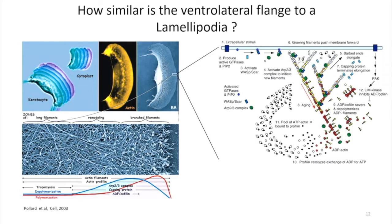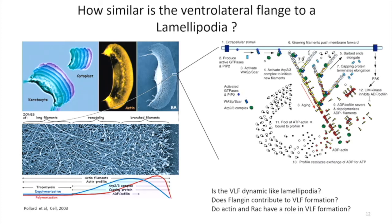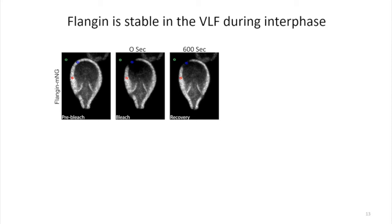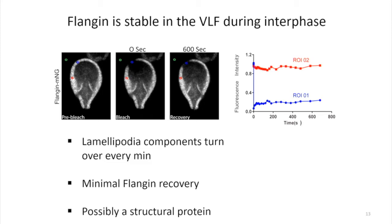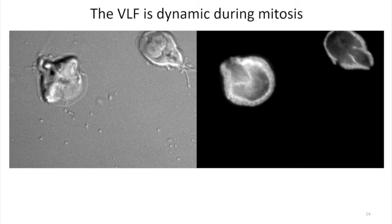The flange looks a lot like lamellipodia, but Giardia is missing all the proteins that regulate actin dynamics. It does have a single Rho family GTPase — more like a Rac homologue — and a single PAK kinase, but everything else besides actin is missing. We can ask: is this structure dynamic like lamellipodia? Does this protein, which we're calling phalangin, contribute to ventrolateral flange formation? And do actin and Rac have a role in its construction? The first thing we did was tag phalangin with mNeonGreen and do FRAP experiments. We see absolutely no turnover — it's completely stable. In lamellipodia you get turnover of actin components about every minute, so minimal recovery suggests a really stable structure is being built here.